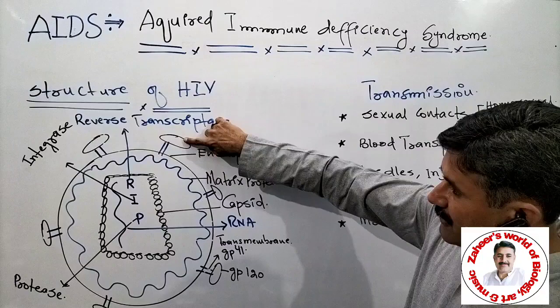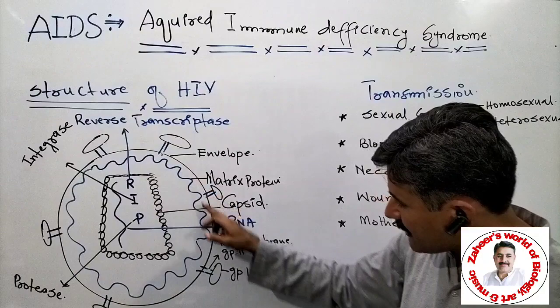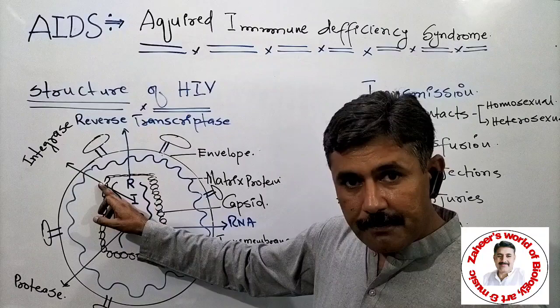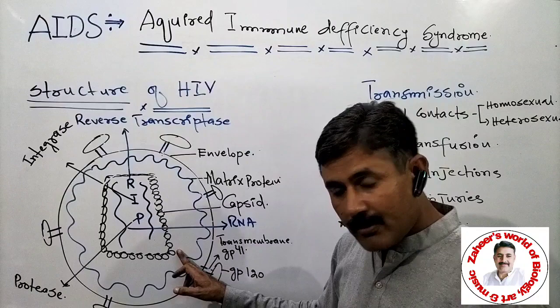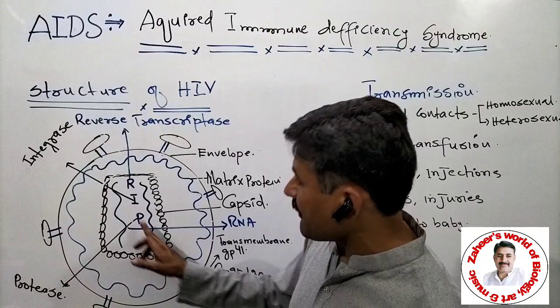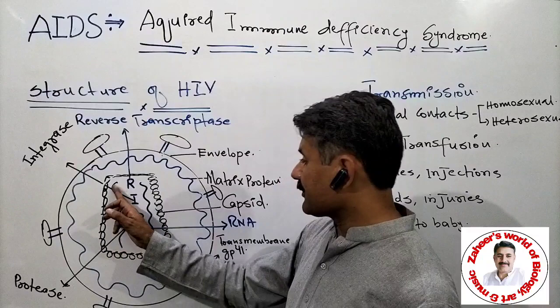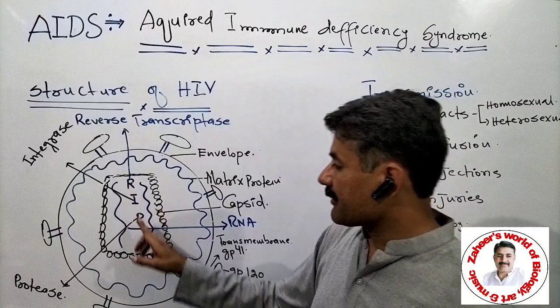On the outside is the envelope, with gp120 and transmembrane glycoprotein 41. Moving inside, there is a matrix protein layer. Further inside, we reach the true structure of the virus, which has an outermost structure called the capsid. Inside the capsid is the core structure, which consists of two molecules of single-stranded RNA — the genome of the HIV virus. Other than these RNA molecules, there are three kinds of enzymes that are also part of the core structure of HIV.